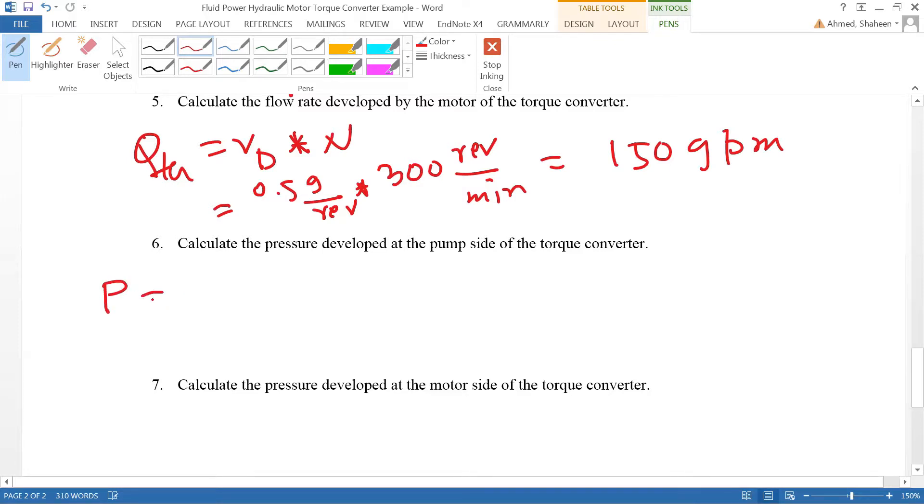We can simply do power equals P times Q divided by 1714. We can plug all this number. Power taken by the pump was 149.3 horsepower, and then the pressure will come in PSI if we use this. So the pump flow was developed 1550 gallon per minute.